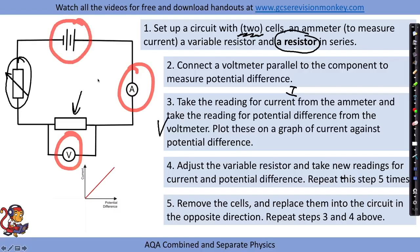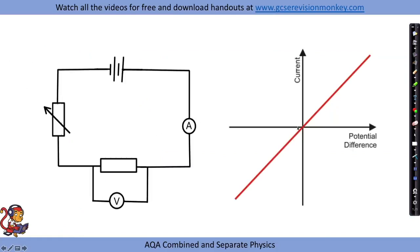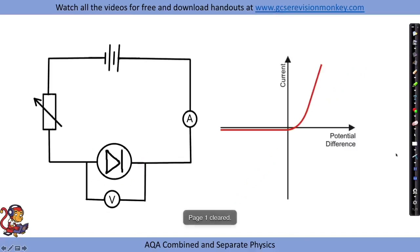To get negative values, we remove the cells and replace them in the circuit in the opposite direction, then repeat the same steps. This gives us negative readings from the voltmeter and ammeter, and we can collect data for the negative region. The completed graph for a resistor at constant temperature shows a directly proportional relationship between current and potential difference. To investigate a different component, we simply replace the resistor — for example with a diode.